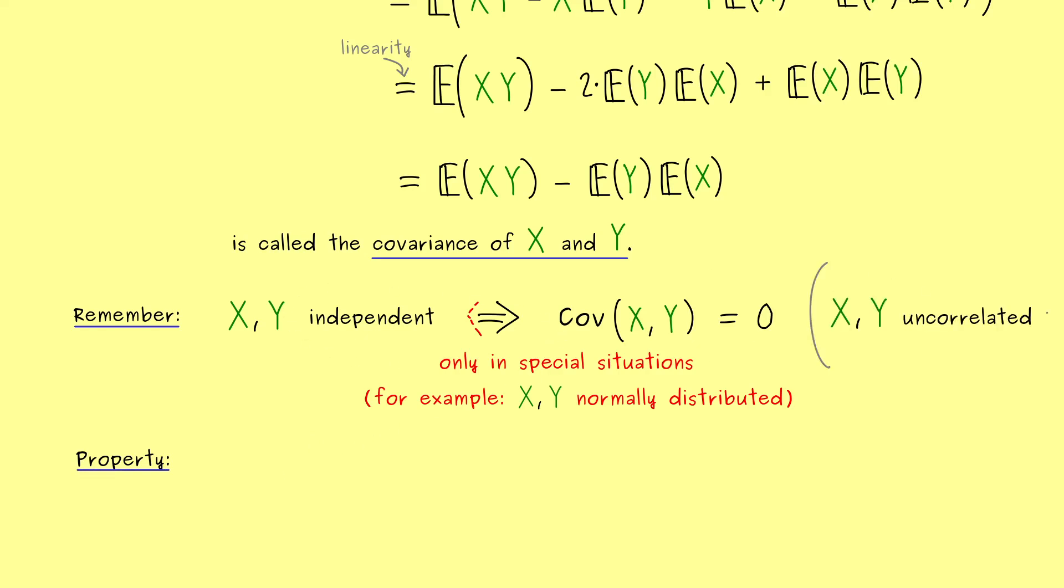Indeed, this is the definition we can put here, if the covariance is zero, X and Y are called uncorrelated. So we already know, this new notion is weaker than the notion independence.